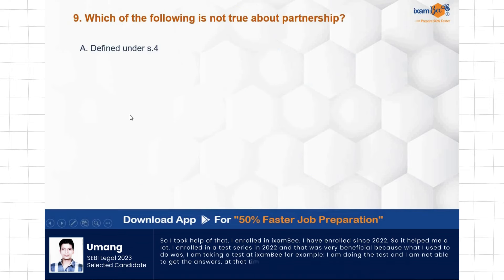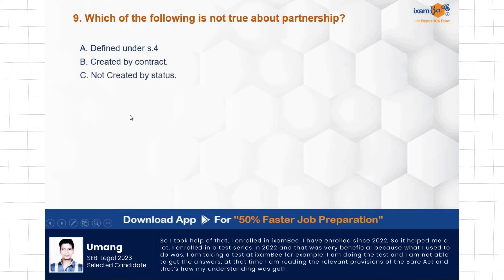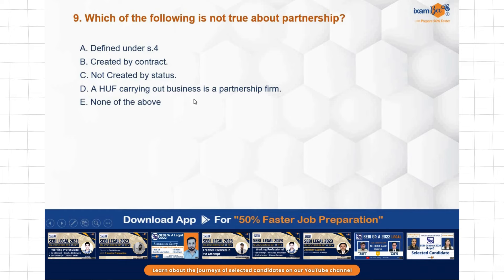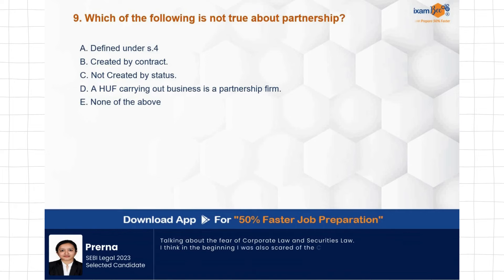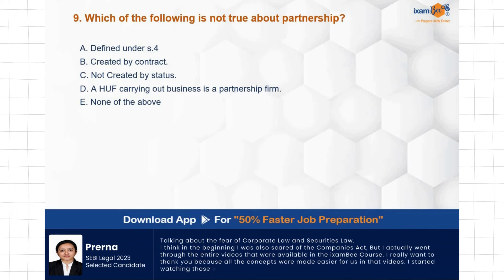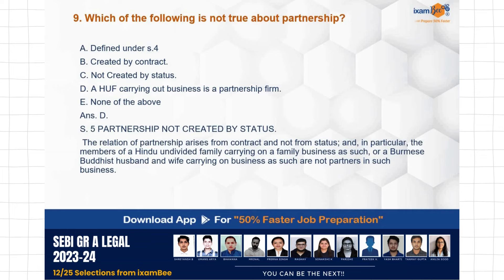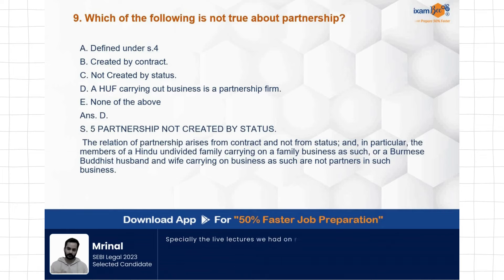Question: Which of the following is not true about partnership? Options: defined under Section 4, created by contract, not created by status, HUF carrying out business in a partnership firm, none of the above. The false statement is option D — HUF carrying out business in a partnership firm is not a partnership firm. Section 5 makes it clear that an HUF carrying out a family business is not a partnership.